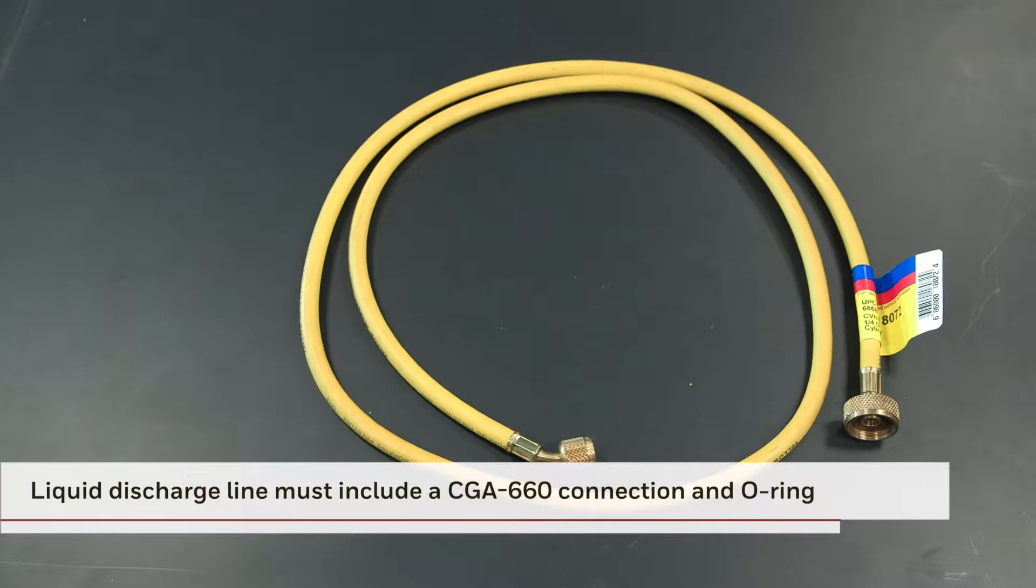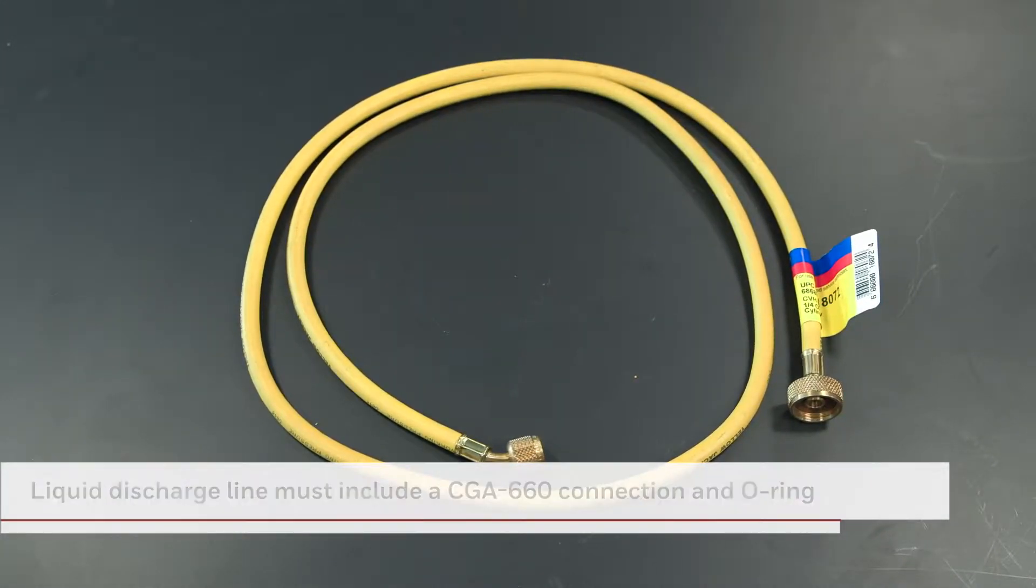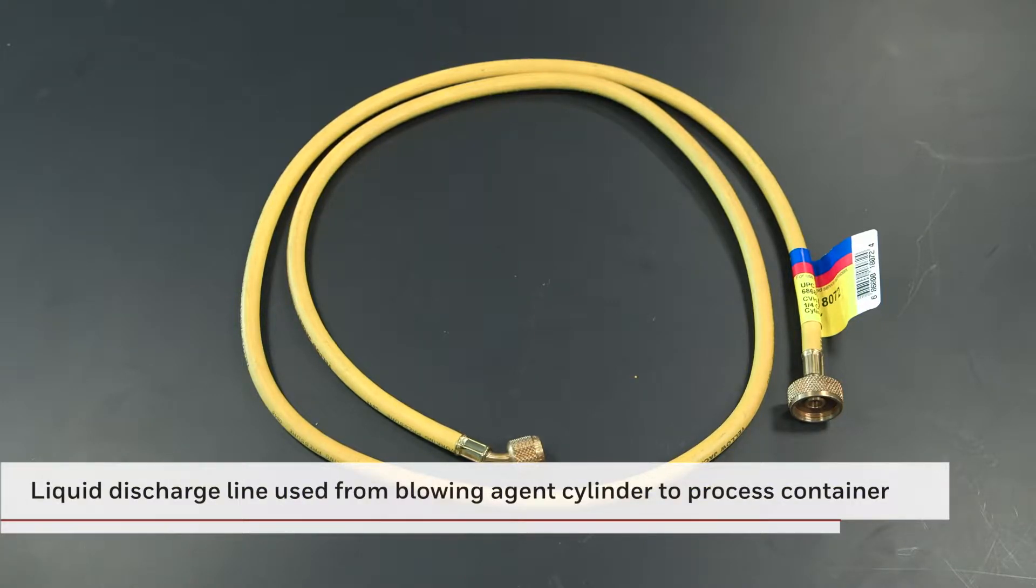You will need a gas hose rated for nitrogen use. Finally, ensure you have a liquid discharge line with a CGA 660 connection and an O-ring. It will be connected to the blowing agent cylinder to dispense to a process container that is suitable for the blowing agent.